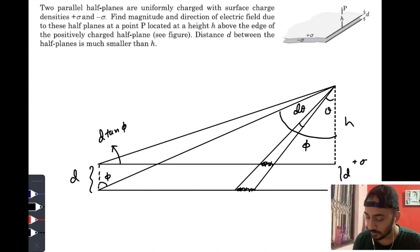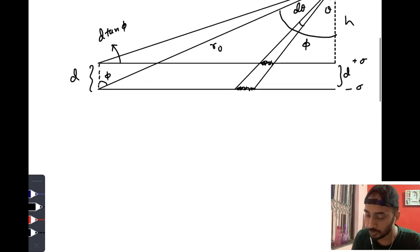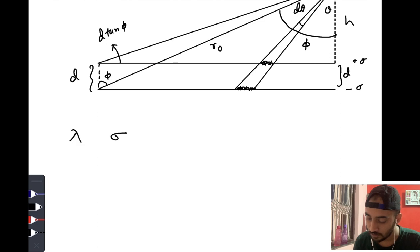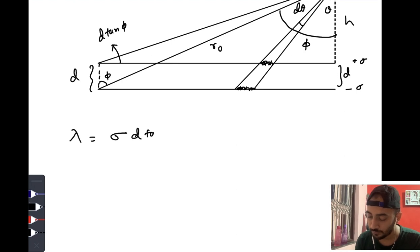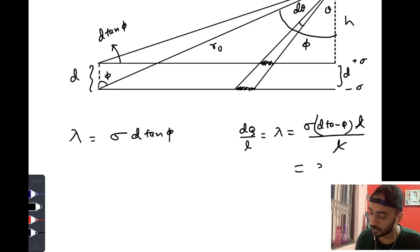Let me consider this length as r₀. The charge per unit length of this linear portion would be σ times d·tan(φ). So the linear charge density is λ = σ·d·tan(φ).